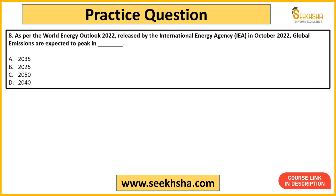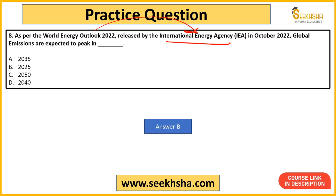According to the World Energy Outlook 2022 released by the International Energy Agency — and note that the IEA releases this report, which could itself be a question — the report stated that global emissions will peak by which year? Options are 2035, 2025, 2050, and 2040. The answer is option B: global emissions will peak by 2025.